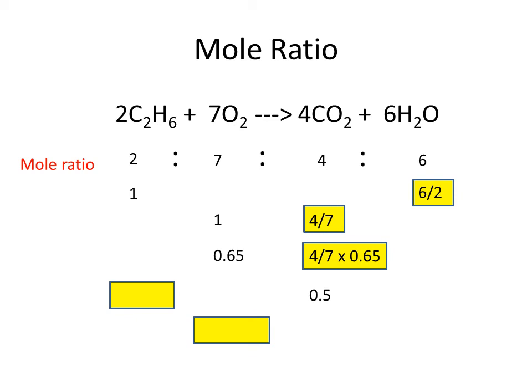You're not only restricted to doing this from the reactant side — you can actually do it from the product side, which is important in industry. If a manufacturer wants to know how much carbon dioxide he's going to produce, he needs to know how much reactant he's going to start with. So if we've got 0.5 of a mole of carbon dioxide and we want to find out how much ethane we need to start with, we divide 2 by 4 to give us our mole ratio, then multiply by 0.5. Similarly, if we only had half a mole of water being produced and wanted to know how much oxygen we'd need, we look at what we want divided by what we've got — so 7 divided by 6 — then multiply by 0.5.